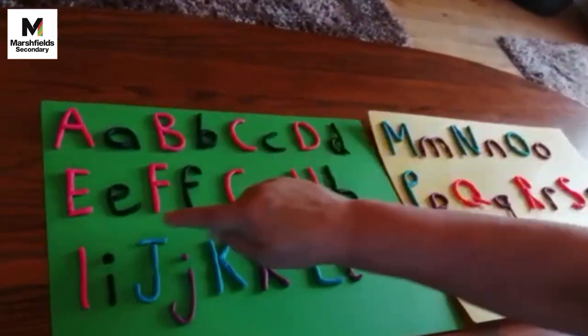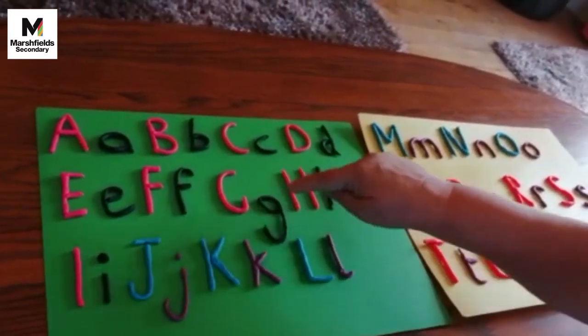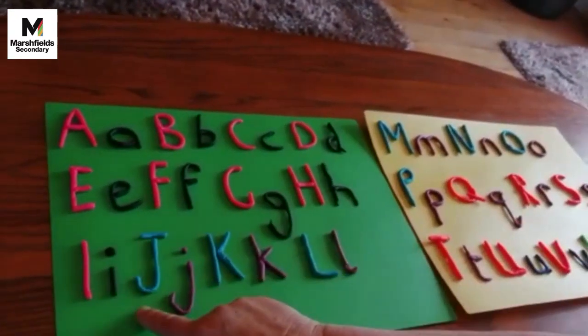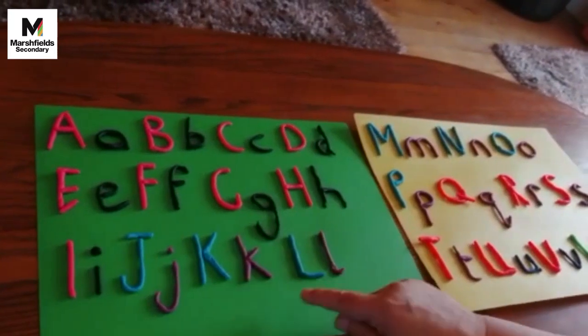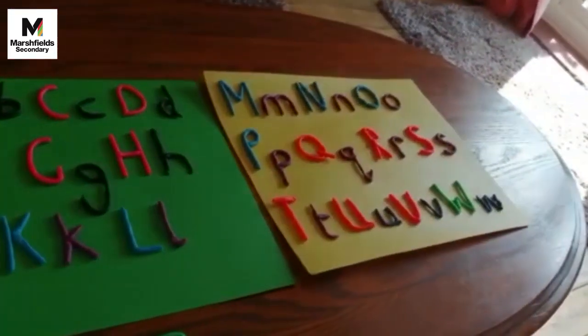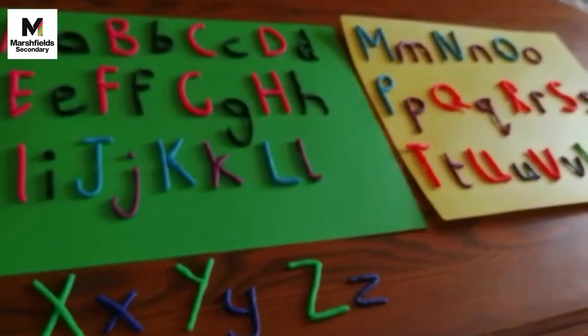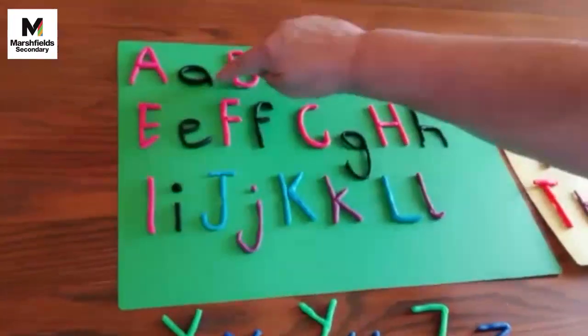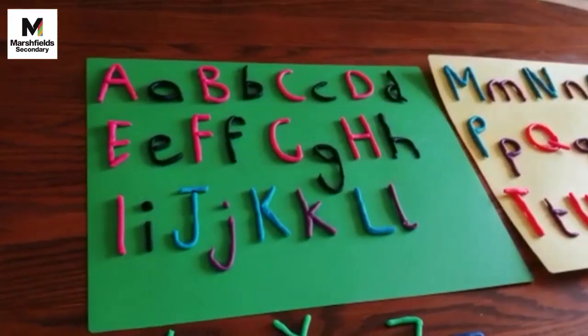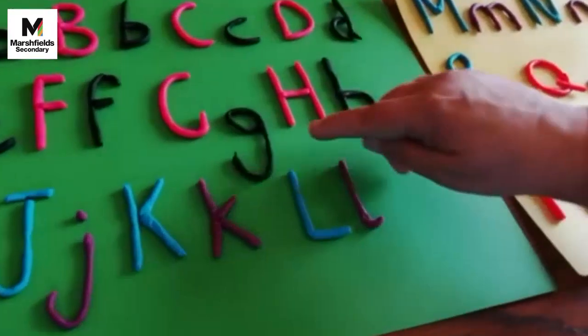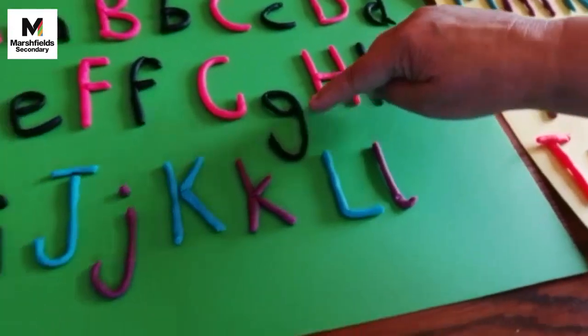However, with the lowercase letters, the small ones, there are some which do hang below the line, such as the G. But you'll notice that this part of the G sits on the line. It's only the tail that hangs down.